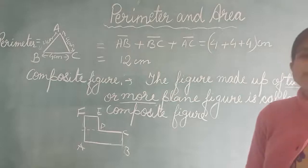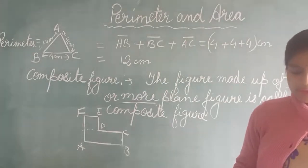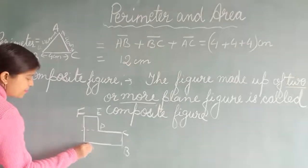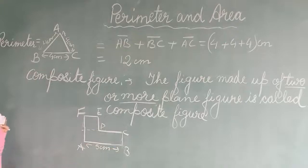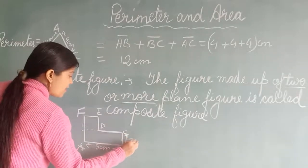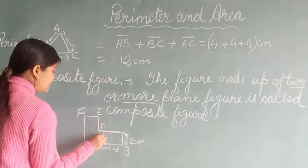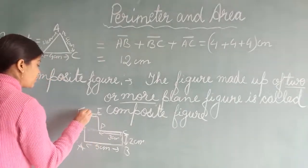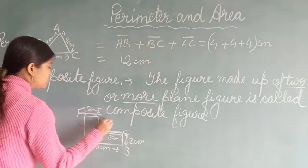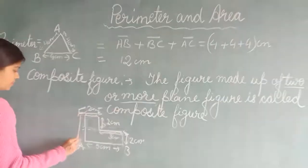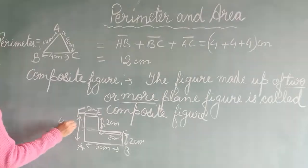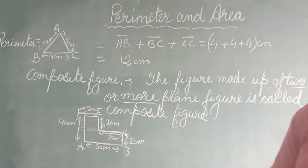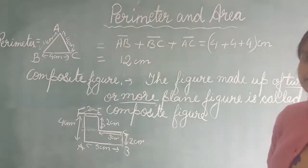Today we will learn how to find the perimeter of this composite figure. I am writing the measurement of each side. AB is equal to 5cm. BC is equal to 2cm. CD is equal to 3cm. DE is equal to 2cm. EF is equal to 2cm. And the last side is equal to 4cm. Now the length of each side is given, so there is no problem to find the perimeter. We simply have to add the length of each side.